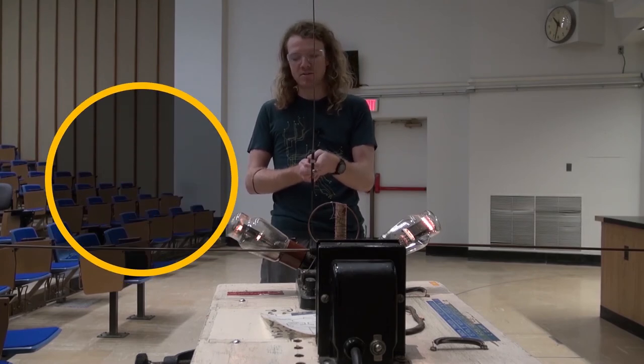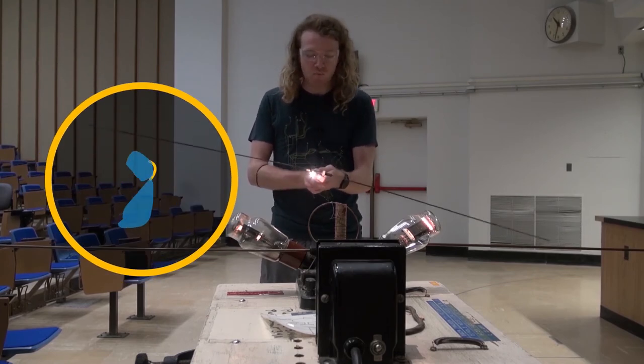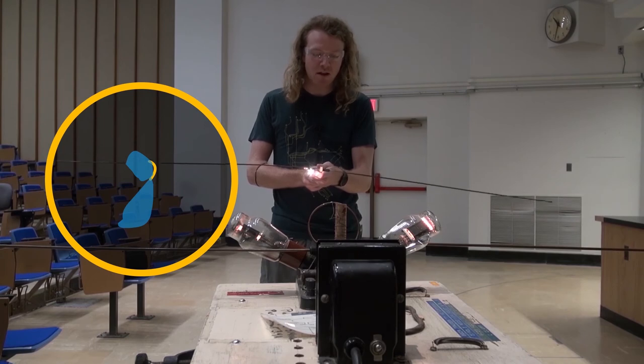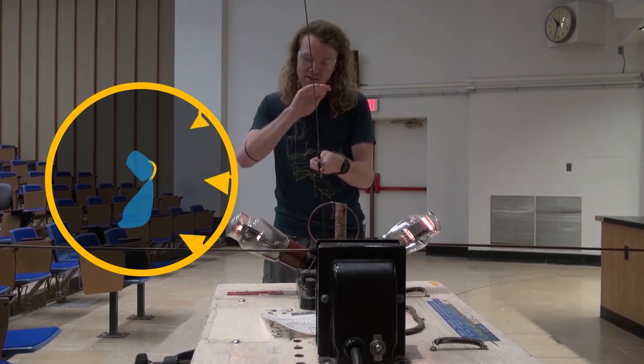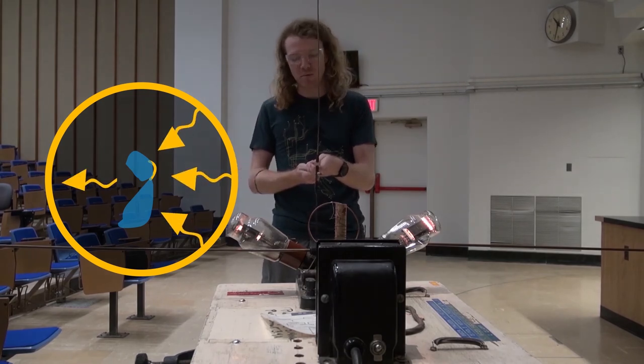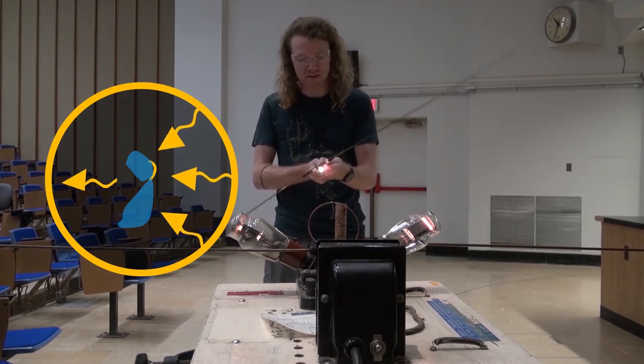If you've ever gone and bought sunglasses that are polarized, your sunglasses are in essence enacting a very similar type of filter, whereby they're only allowing light waves of a particular orientation through your sunglasses, which helps cut down on the amount of light that your eyes receive.